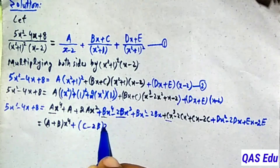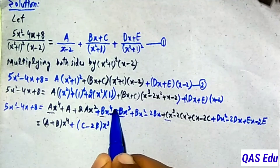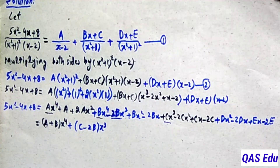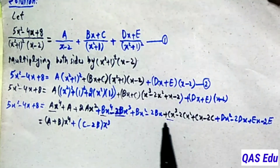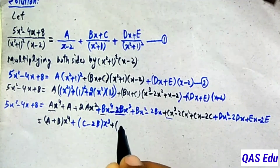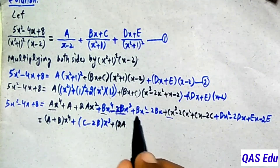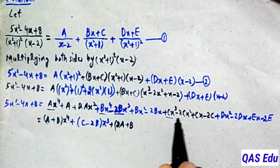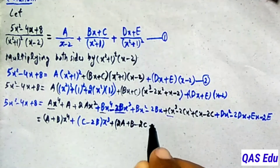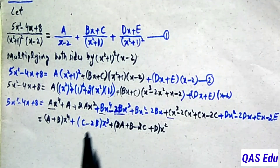Now we collect terms by the same power of x. For x to the power 4: A plus B times x to the power 4. For x cubed terms: minus 2B plus C times x cubed. For x squared terms: plus 2A plus B minus 2C plus D times x squared.